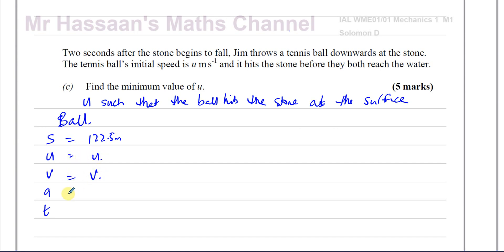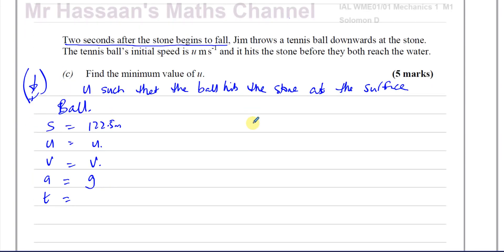Considering the ball using SUVAT: it has traveled S = 122.5 meters, U is what we find, acceleration A = G = 9.8 (taking down as positive). For time T: the stone was in the air for five seconds, and the ball is thrown two seconds after the stone begins to fall, so the ball has been in the air for 5 − 2 = 3 seconds at the point where it hits the stone.